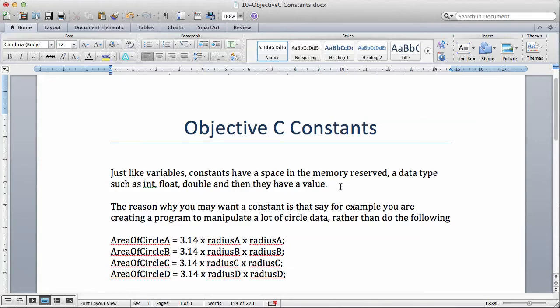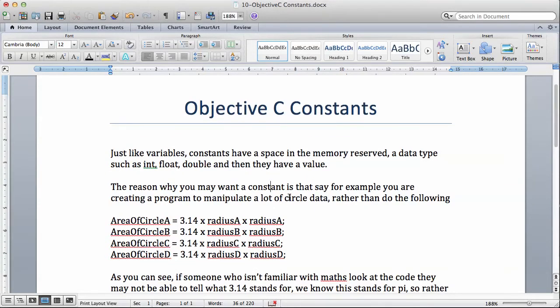Constants are just exactly like variables. The difference is that you use a constant to represent a value that doesn't change. The reason why you may want a constant is that, say for example, you are creating a program to manipulate a lot of circle data rather than do the following.